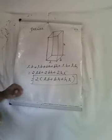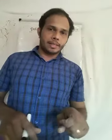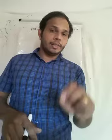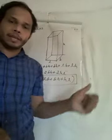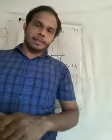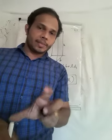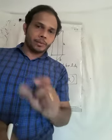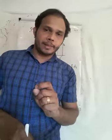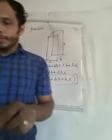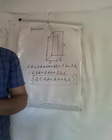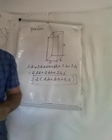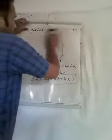So this is the total surface area of a cuboid. The total surface area of a cuboid equals 2(LB + BH + LH). That is the total surface area of a cuboid. Next one — cylinder.